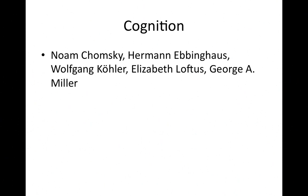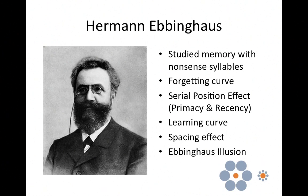In cognition, we have Chomsky, Ebbinghaus, Kohler, Loftus, and George Miller. Ebbinghaus studied memory with nonsense syllables and created the forgetting curve. He also discovered the serial position effect with the primacy and recency effects, the learning curve, and the spacing effect — showing that massed practice is not as good as spaced practice. He also created an optical illusion shown in the bottom right corner of your screen.